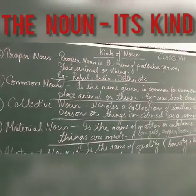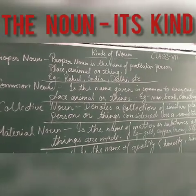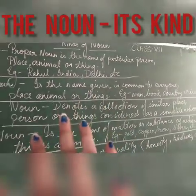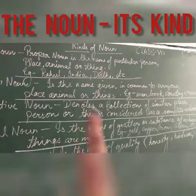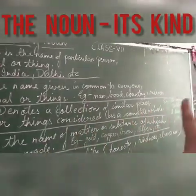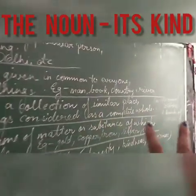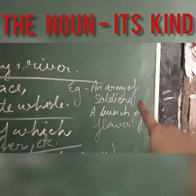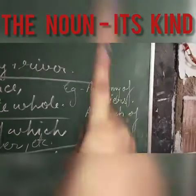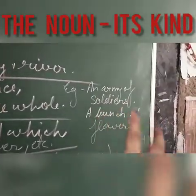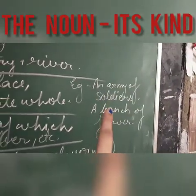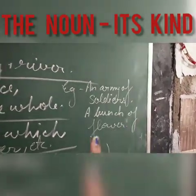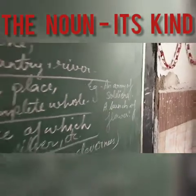Come to the third one, collective noun. What is collective noun? Collective noun denotes a collection of similar place, person or thing, considered as a complete whole. For example, an army of soldiers — bahut saare soldiers hai, unko mila ke hamaari ek army banti hai, that is the army of soldiers, that is our collective noun example. Then the bunch of flowers — bahut saari flowers ko mila ke hamaara ek bunch banta hai, that is the collection of flowers — collective noun ka hamaara ye example hai.